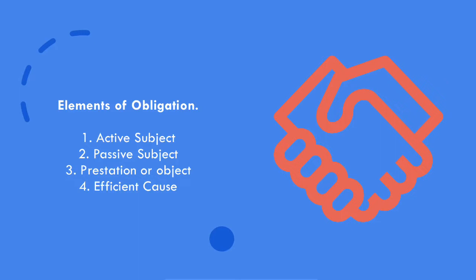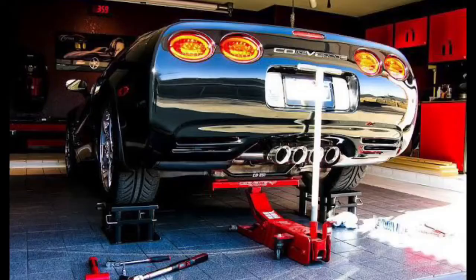There are four elements of an obligation. First is the active subject, the one who is demanding the performance of the obligation — the one in whose favor the obligation is constituted, established, or created. He is called the creditor or obligee. Second is the passive subject, the one bound to perform the prestation to give, to do, or not to do — called the debtor or obligor. Third is the prestation or object, the subject matter of the obligation which has an economic value or is susceptible of pecuniary substitution in case of non-compliance. And fourth is the efficient cause, the juridical tie or vinculum by virtue of which the debtor has become bound to perform the prestation.